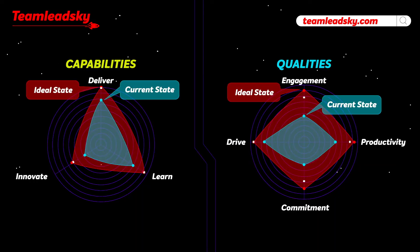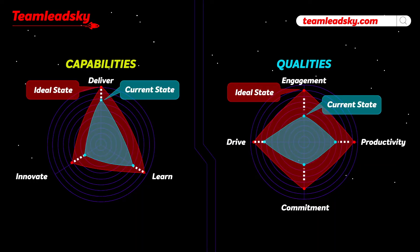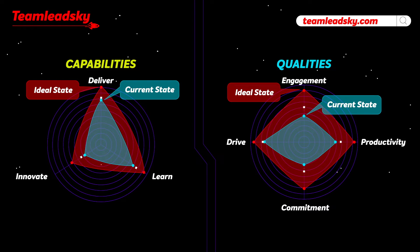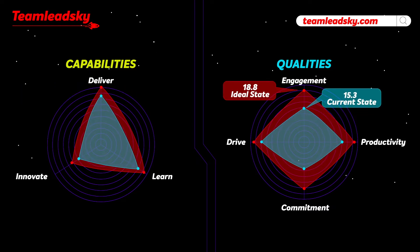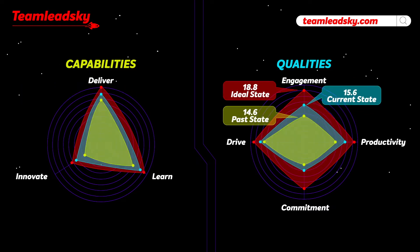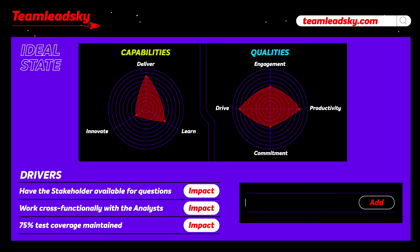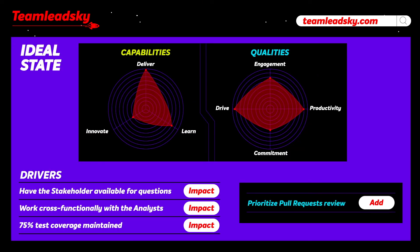Discuss with the team members how to bridge the gap between the current and the ideal states and act together. Review measurable progress frequently, as well as the developmental goal as team members learn more about their collaboration and projects they are undertaking together.